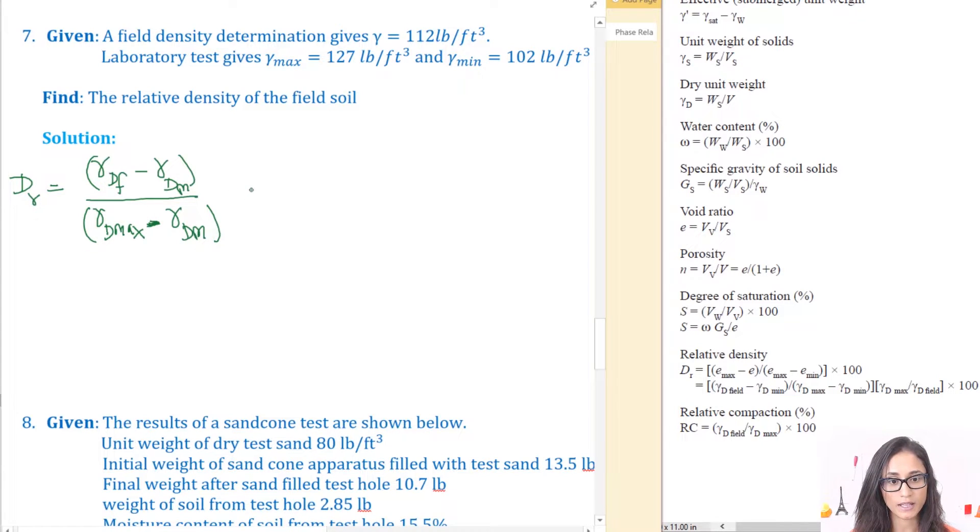And then we're going to multiply that by gamma d max divided by gamma d field which is f and multiply it by 100.